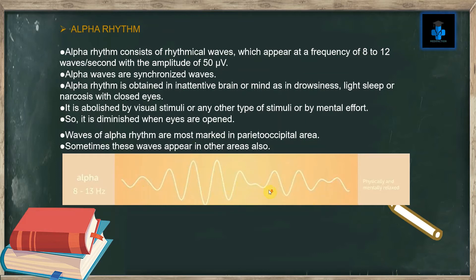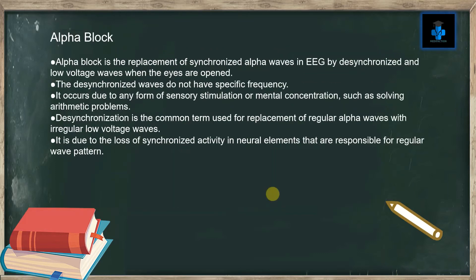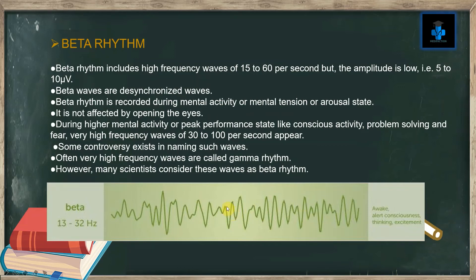Alpha block is the replacement of synchronized alpha waves in EEG by desynchronized and low voltage waves when the eyes are opened. The desynchronized waves do not have a specific frequency. It occurs due to any form of sensory stimulation or mental concentration, such as solving arithmetic problems. Desynchronization is the common term used for replacement of regular alpha waves with irregular low voltage waves. It is due to the loss of synchronized activity in neural elements responsible for the regular wave pattern.